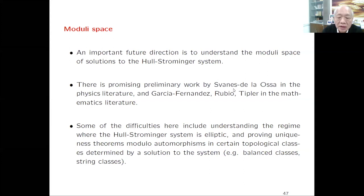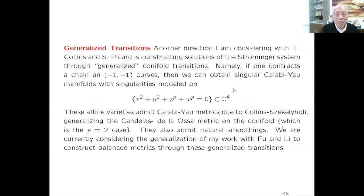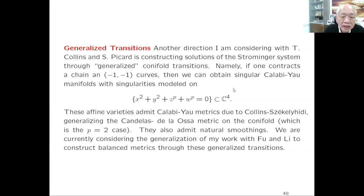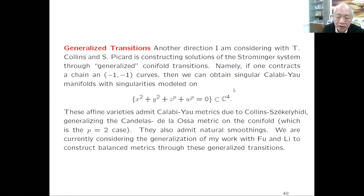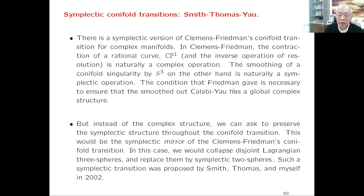There are other ways to do the transition. When we contract the (-1, -1) curve, we base it on a singular Calabi-Yau manifold singularity model with p equal to 2, where E is a rational double point. But we can consider such a model with p > 2, dealing with more complicated singularities than rational double points, which could admit smooth natural smoothings. This generalizes to more complicated singularities and gives a larger class of deformations of the Calabi-Yau manifold.